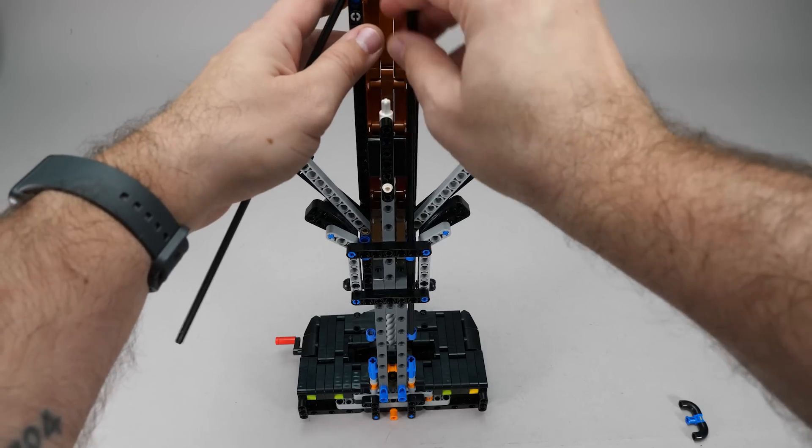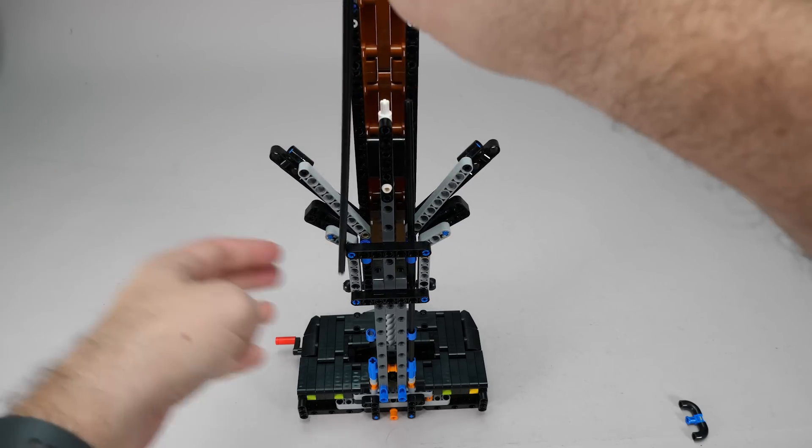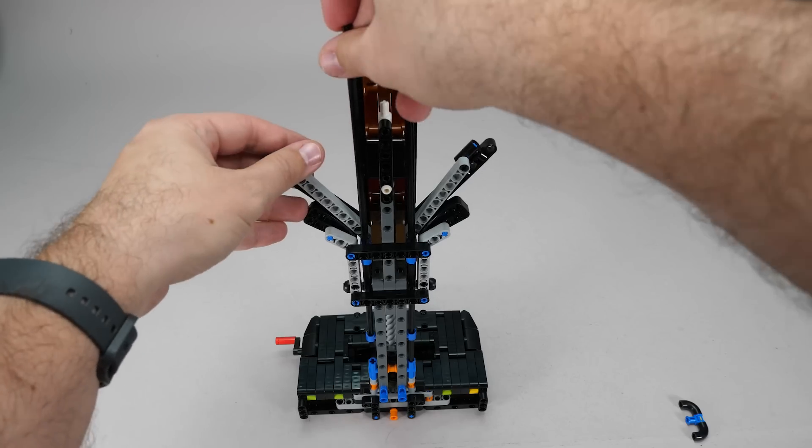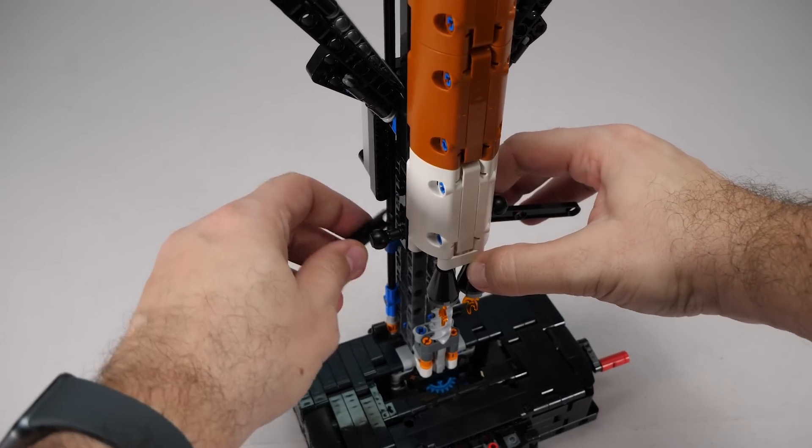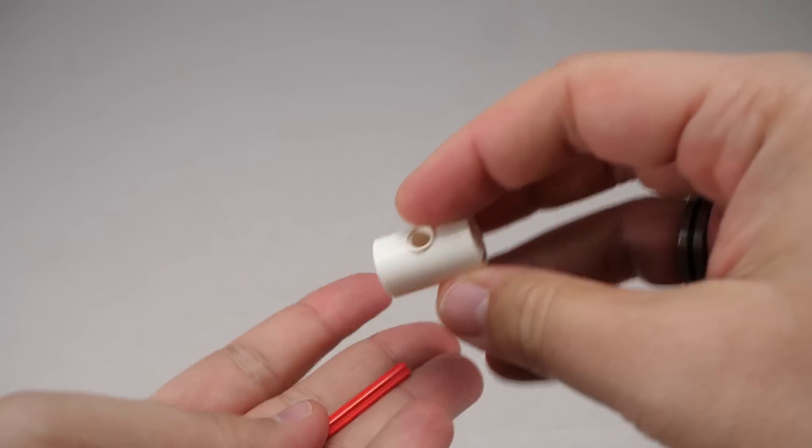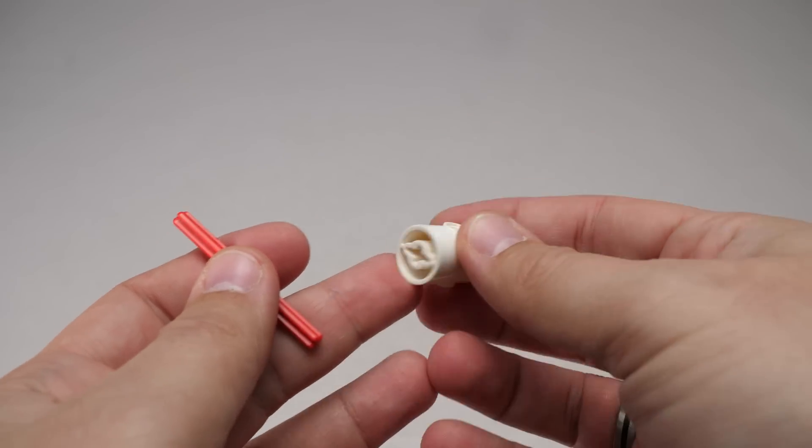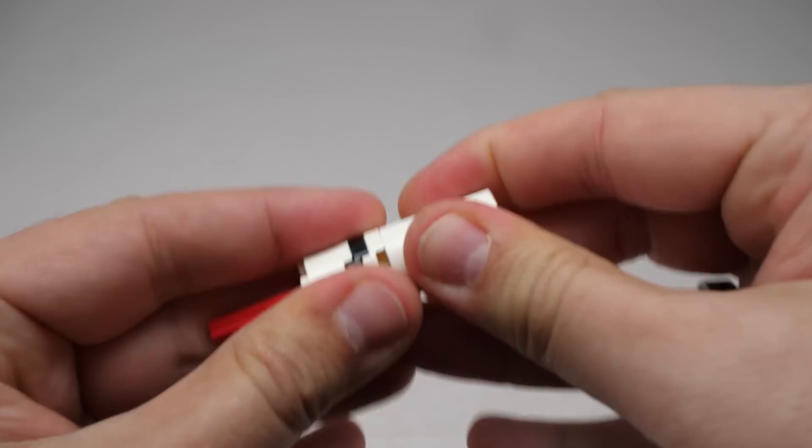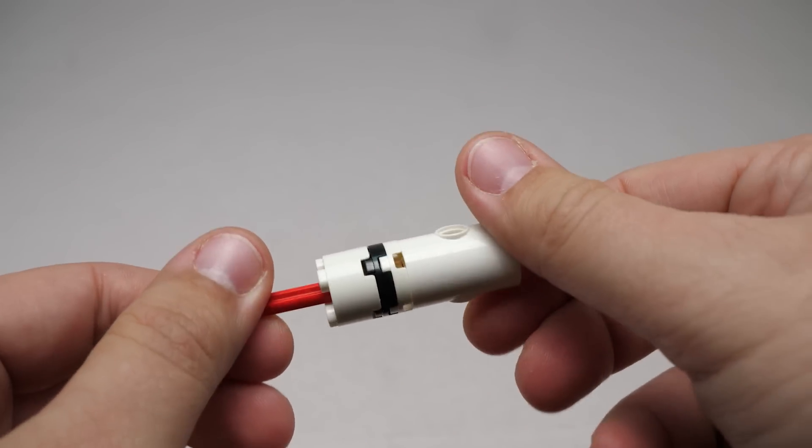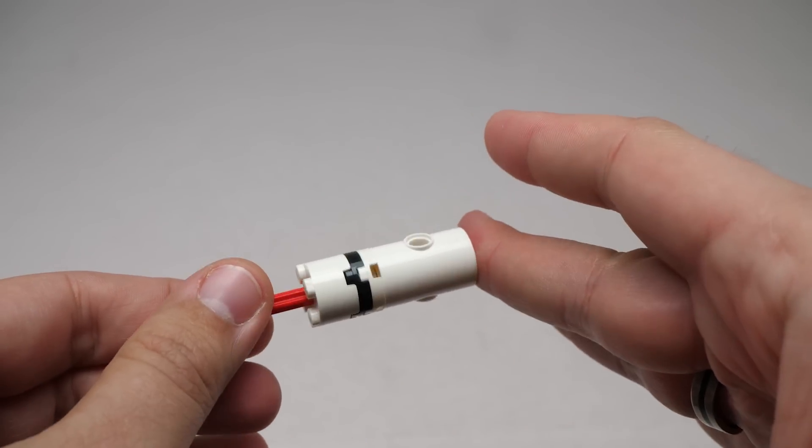Then we get two 32 module long axles, they are not new, but they are surprisingly rare in Technic sets. We also see links borrowed from train sets, followed by another new element, a cylindrical piece with an axle hole in the center and two pinholes on the sides. Its diameter matches 2x2 round system elements, so this will definitely be a useful part going forward.